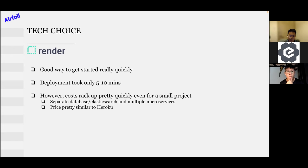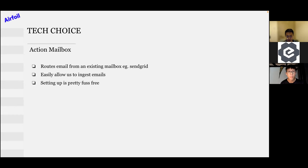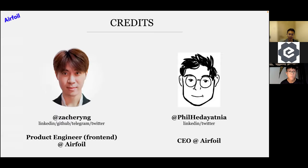Another technical choice is Rails' out-of-the-box Action Mailbox. Using SendGrid with Action Mailbox is plug-and-play — it lets us ingest emails easily so we can focus on what content to show users rather than worrying about email ingestion. Setting it up was fast because Rails has a guide for it.